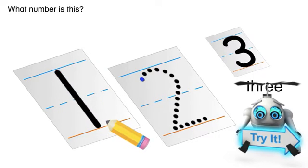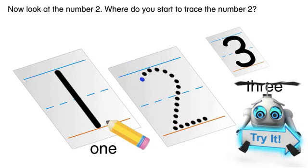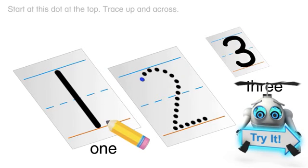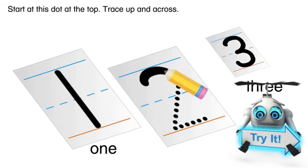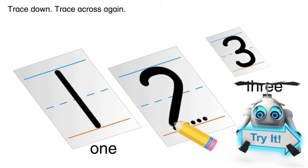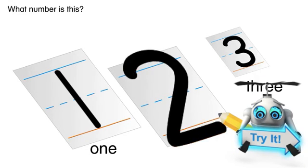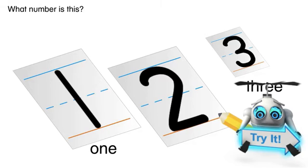What number is this? This is the number one. Now look at the number two. Where do you start to trace the number two? Start at this dot at the top. Trace up and across. Trace down. Trace across again. What number is this? This is the number two.